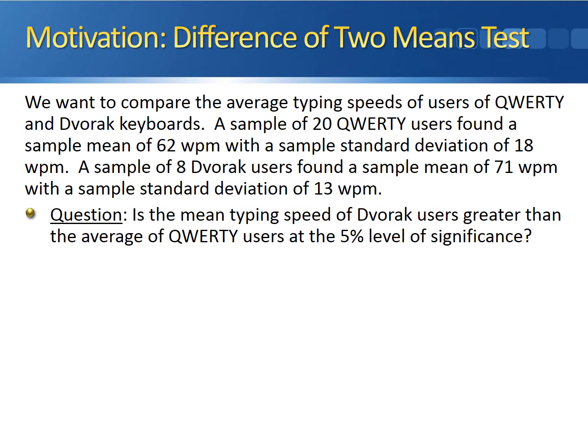For this example, we're going to compare the typing speeds of two different keyboard layouts: the QWERTY keyboard, which is what most people use, and the Dvorak keyboard, which is a more uncommon keyboard layout. A sample of 20 QWERTY users found a sample mean of 62 words per minute with a sample standard deviation of 18 words per minute. A sample of 8 Dvorak keyboard users found a sample mean of 71 words per minute with a sample standard deviation of 13 words per minute.